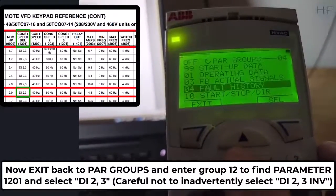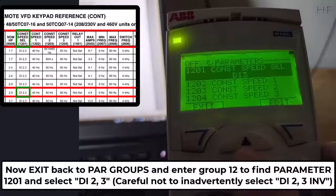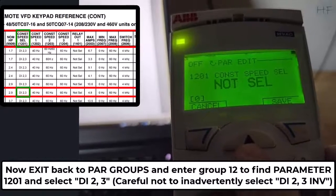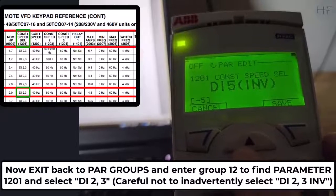Now exit back to parameter groups and enter group 12 to find parameter 1201 and select digital input 2 and 3. Be careful not to select the inverse option for this parameter.